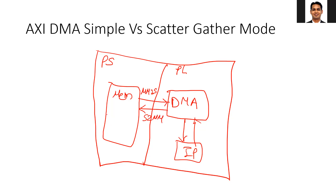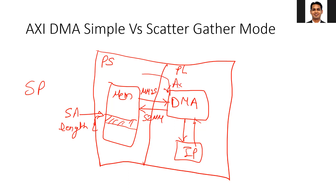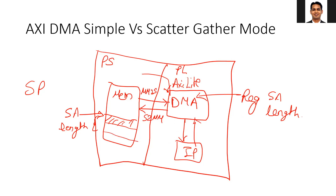In the case of simple DMA, suppose your data is present at a certain address — that is your start address, and you also define the length of the data to be transferred. Using the simple transfer, you configure the DMA. The PS configures the DMA via AXI Lite by writing into the registers. You write the start address, the length, and start the DMA by setting the run-stop bit to 1. The DMA reads the data and sends it to the IP via MM2S. For S2MM, the DMA reads data from the IP and writes it back to memory at a destination address.